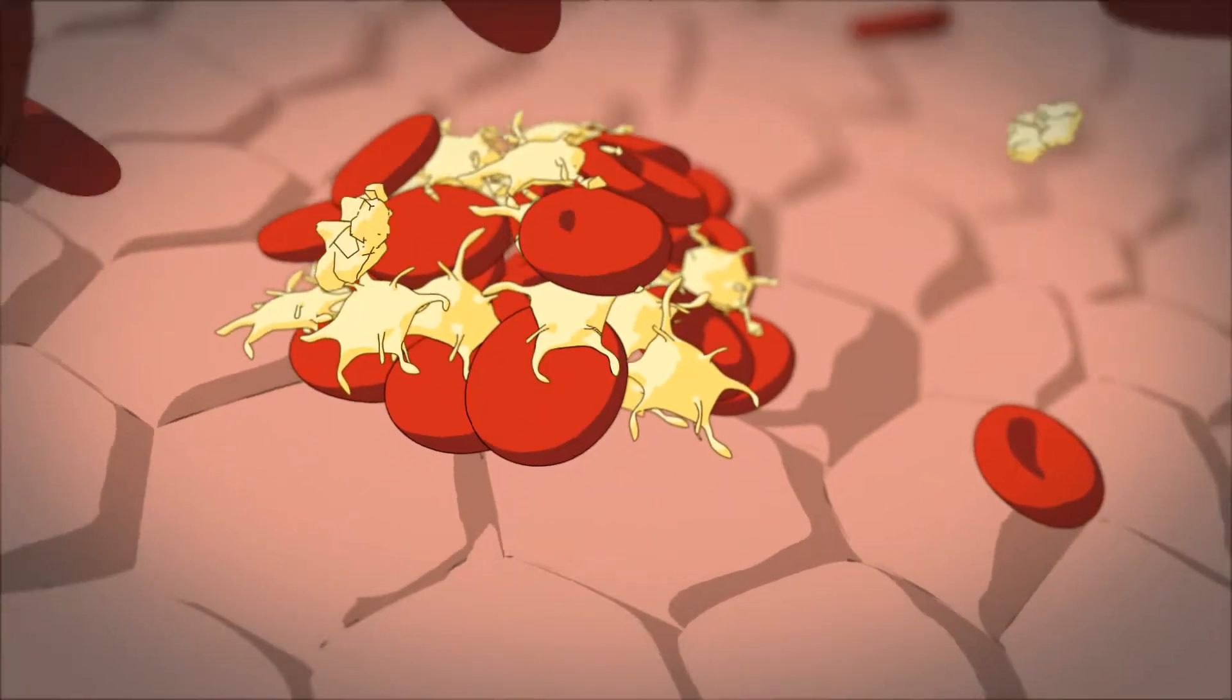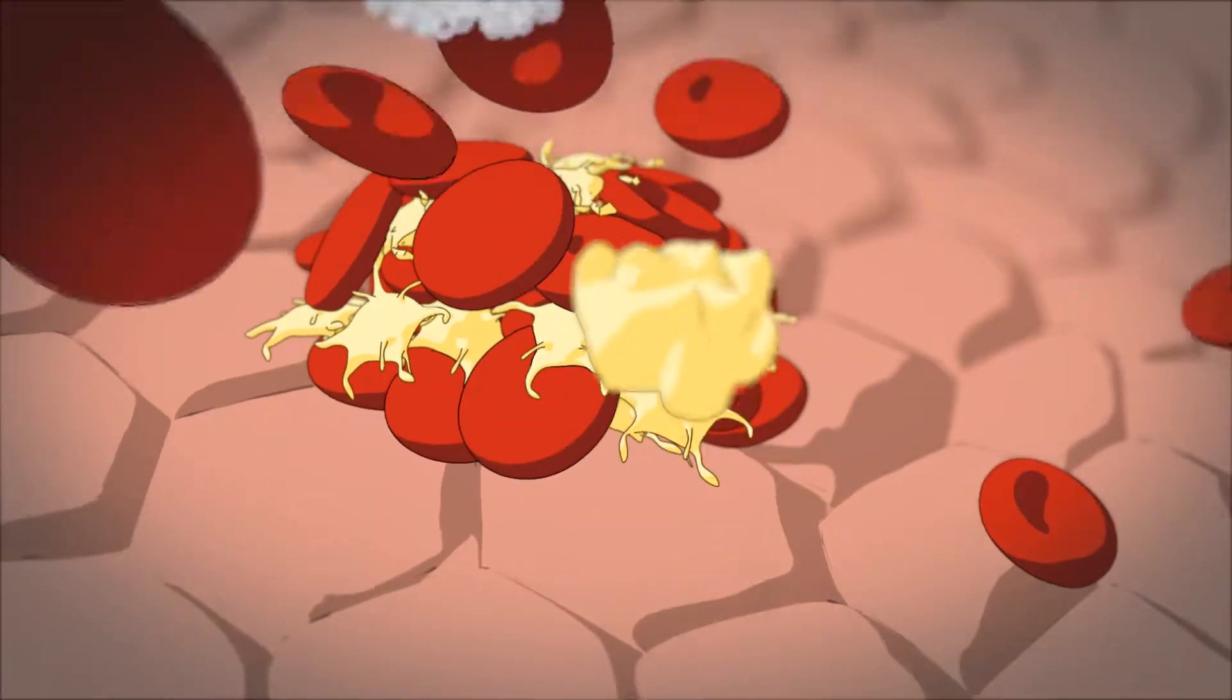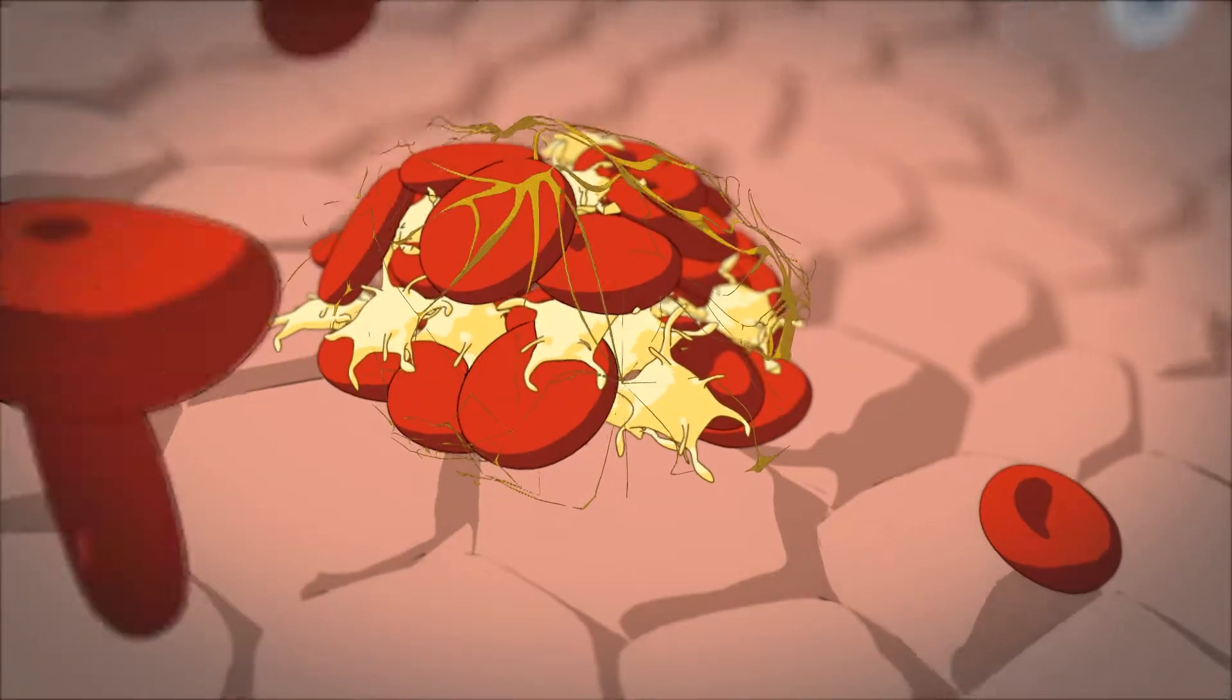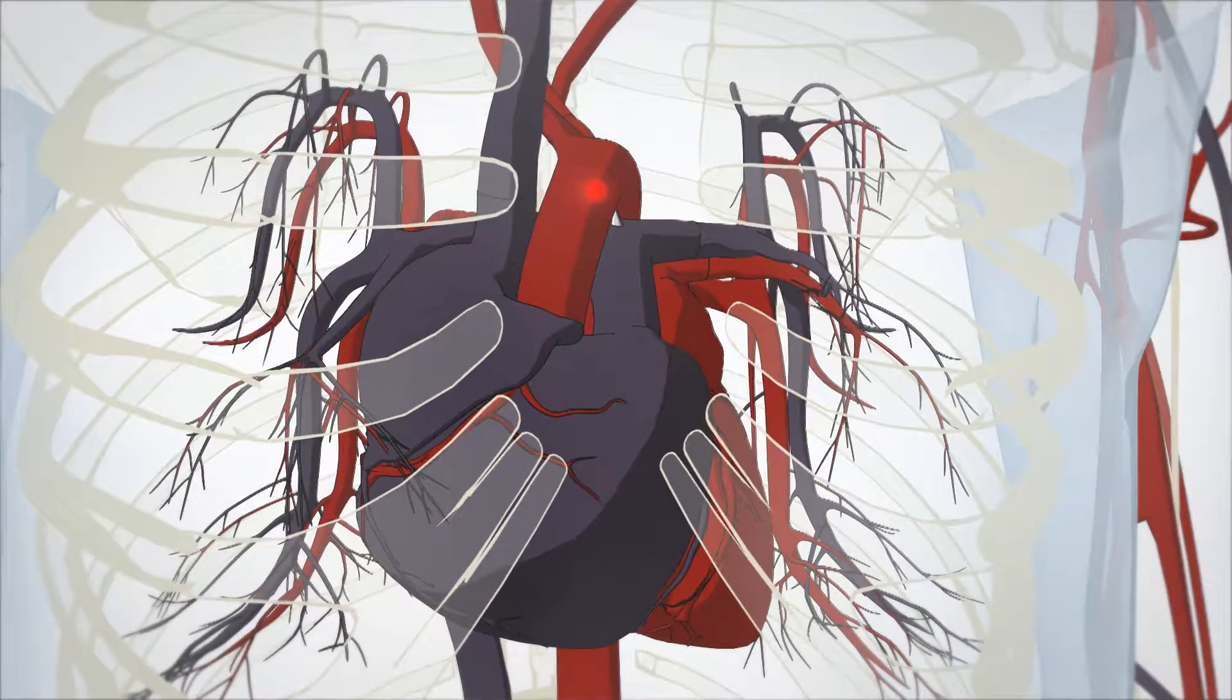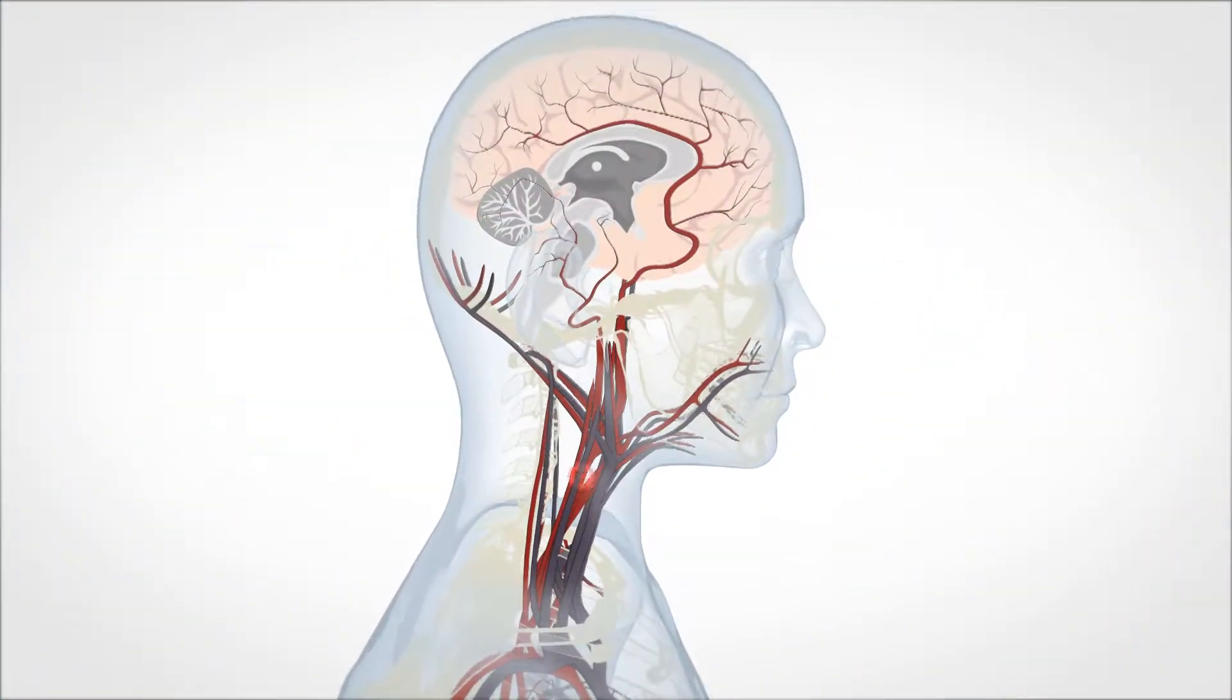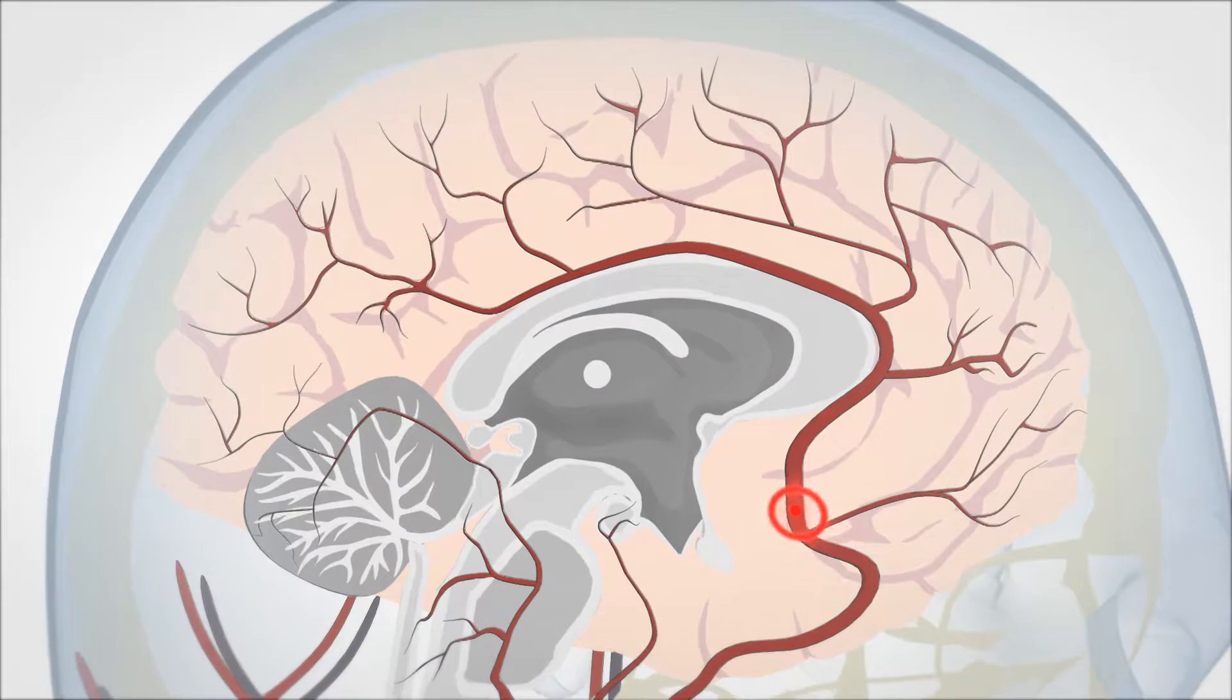A blood clot that forms this way can leave the heart and travel through the arterial system directly into the brain. As the blood vessels branch out, the clot may reach a point where it becomes too large for the vessel and effectively blocks it.